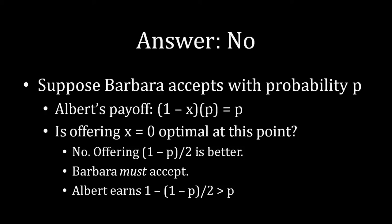All right, well now we need to ask ourselves retrospectively, if Albert's expected payoff for demanding everything is equal to p, would he actually want to demand everything? Is offering x equal to zero optimal at this point? And the answer is no. Why is that the case? Well, imagine that instead of demanding everything and leaving Barbara with nothing, he offered Barbara some positive amount equal to 1 minus p divided by 2.